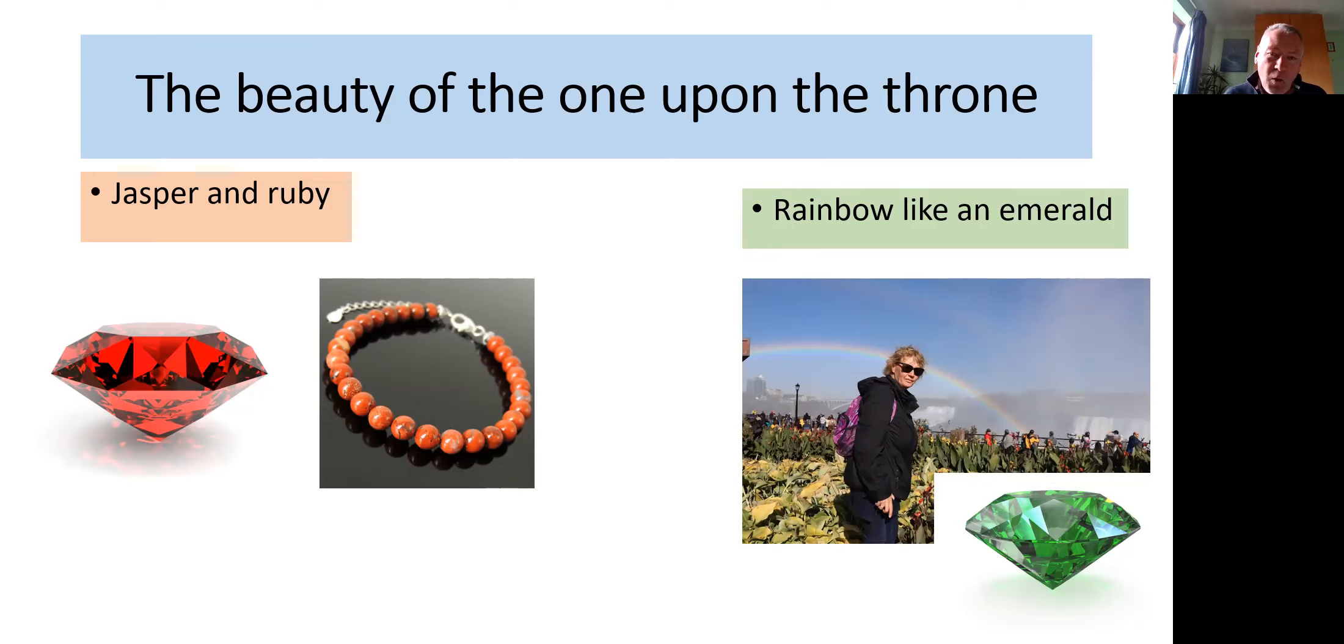And we're also told that there is a rainbow resembling an emerald that encircles the throne. I don't know about you, but whenever we're on a walk and we see a rainbow, we have to stop. We have to look at it. And usually if we've got the camera with us, we have to try and capture its beauty with the camera. And you can see on the screen there a picture of Sue. That's at Niagara. And this rainbow around the throne is said to be emerald. I can't quite picture it. Can you picture an emerald rainbow? But these are evocative images, and they're meant to evoke a sense of brilliance, of splendor, of majesty, and above all, of beauty. And the brilliance of what is seen irradiates to all around. The one who is on the throne is supreme in his dazzling beauty.